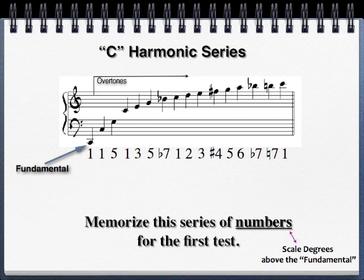You can hear these overtones on a piano — the only instrument that plays all the overtones of the series. Hold down a note that's going to be an overtone, just press the key softly so the damper is released from that string, then hit the fundamental — hit the low C — and you will hear the upper note ring through. The higher it gets the harder it is to hear, but you can still hear these sympathetic vibrations.